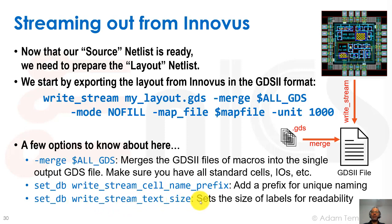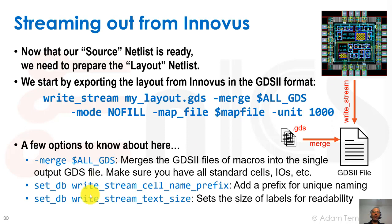Another thing is the text size. You're going to look at the layout often to see all kinds of bugs and problems. It really helps if we can see the different texts and labels put in by the layout designer. If the text size is too small, you won't see them, or you only see them at a really low zoom level. If they're too big, they'll fall on top of each other and be incoherent. So you can adjust this text size to get something that helps us debug.